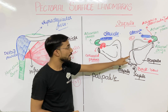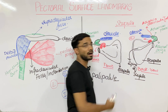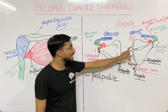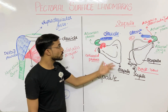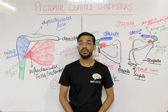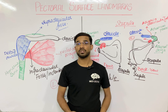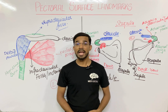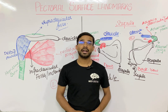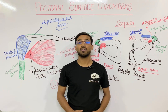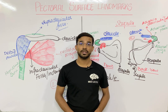The acromion process is continuous with the spine of the scapula — that is the important thing about the acromion process. So in this lecture we discussed the supraclavicular fossa, the infraclavicular fossa, and the two most important components of the scapula: the acromion process and the coracoid process. If you still have any questions, you may ask in the comment section. Thank you.